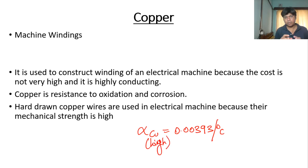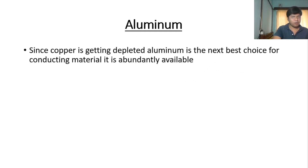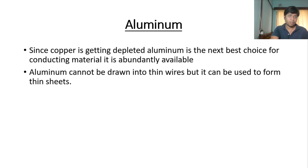On the basis of general mathematics, the value 0.00393 is low numerically, but copper's temperature coefficient is considered high in practice. Now, since copper is getting depleted, aluminium is the next best choice for conducting materials because it is abundantly available. However, aluminium cannot be drawn into thin wires as easily as copper, so it can be used to form thin shapes in other ways.